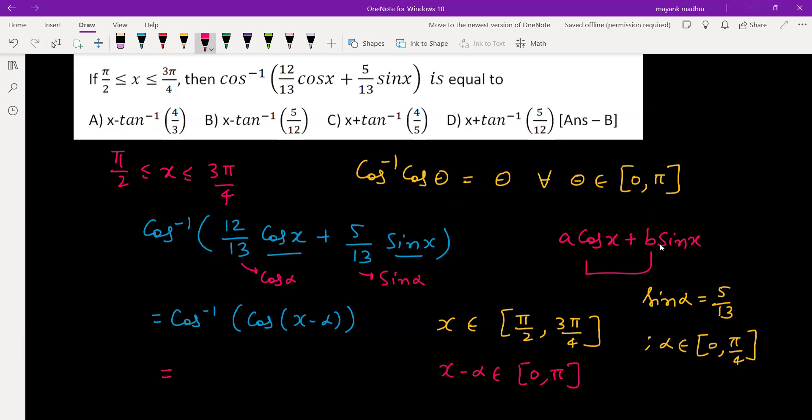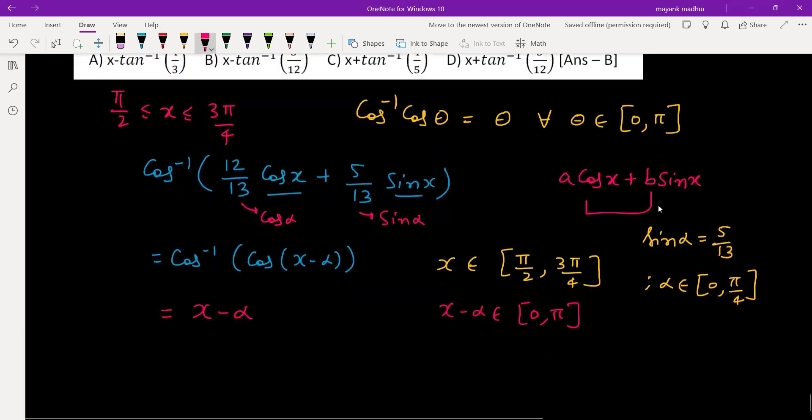Now looking at all the options, it is x minus something, but that something is in terms of tan inverse. So when you have cos α as 12/13 and sin α is 5/13, then what is tan α? You divide these two and you get tan α is 5/12, so α is tan inverse 5/12.